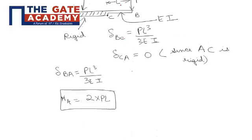Now if we talk about deflection at B, we know that for a cantilever beam it is given by PL cubed by 3EI. Now portion AC is a rigid one.